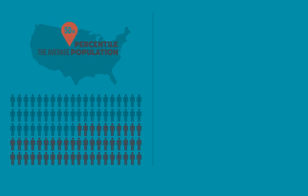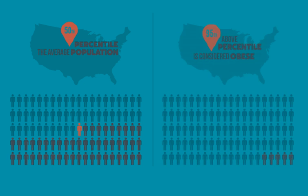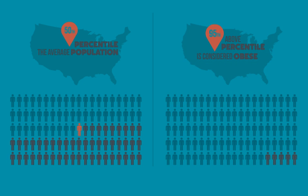Here's an example: a child whose BMI is at the 50th percentile is close to the average population. And a child that is above the 95th percentile is considered obese, because 95 percent of children — or 95 out of 100 children at that age and height — weigh less than that child.